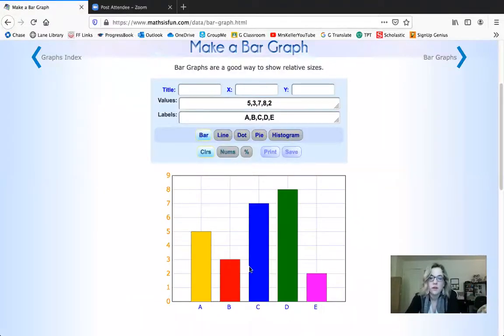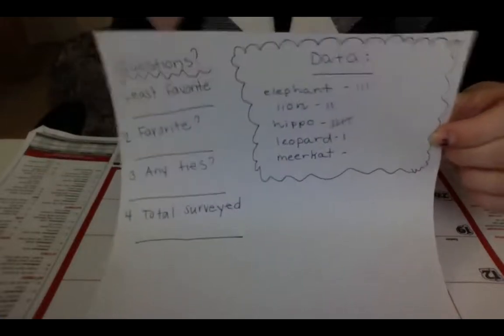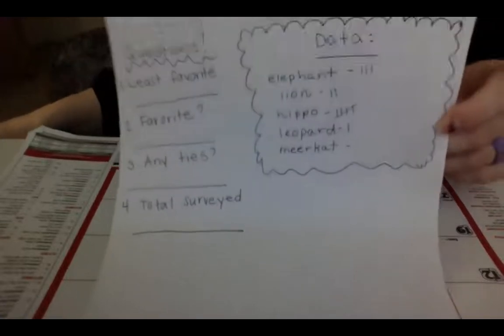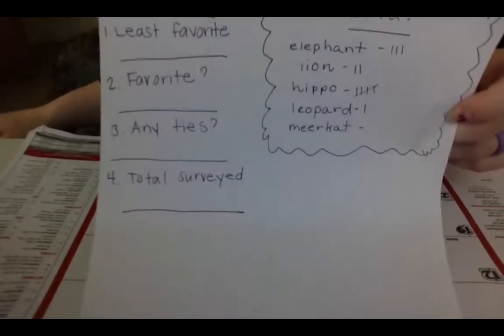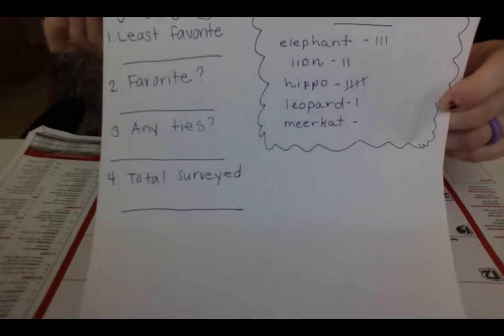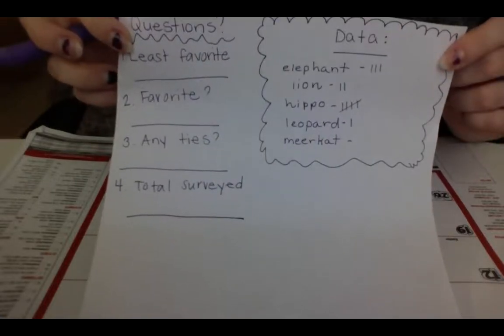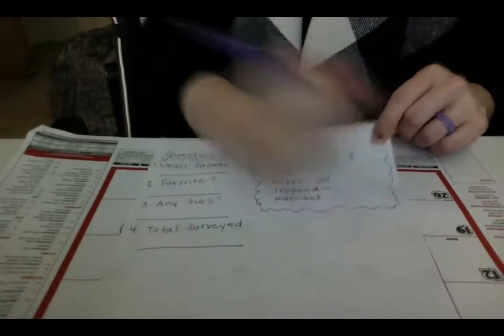Before we make our own bar graph using technology for Technology Tuesday, I'm going to show you what I'm working on here. I did a survey of my family members — those who don't live with me, I called on the phone. I asked them about their favorite zoo animals, with our virtual field trip and writing research project coming up. Their options were elephant, lion, hippo, leopard, and meerkat. I used tally marks just like in the BrainPop video to record my data. Let's count these up together — how many people liked elephants the most? One, two, three — three people liked elephants the most.